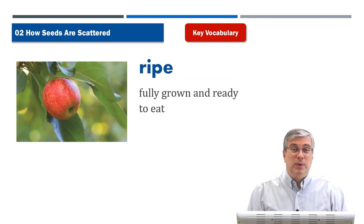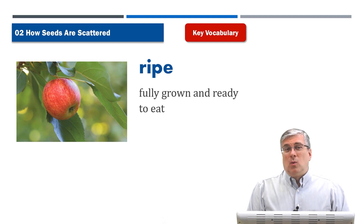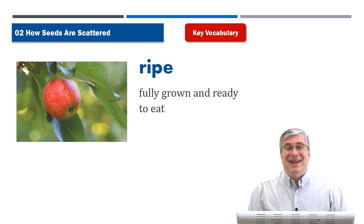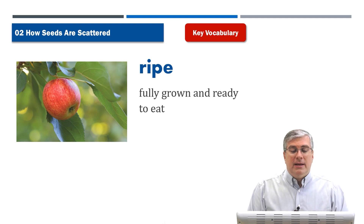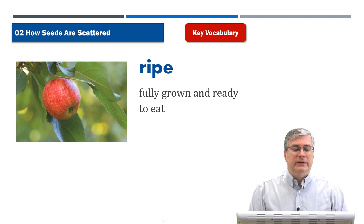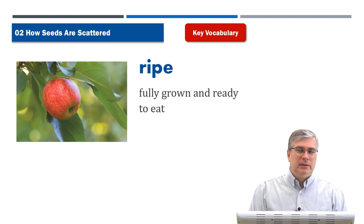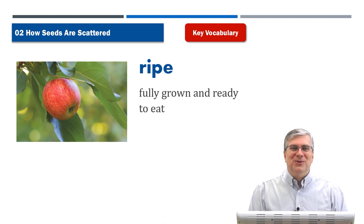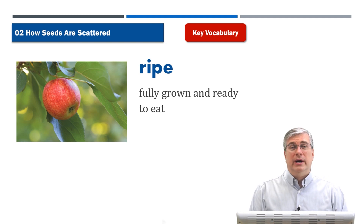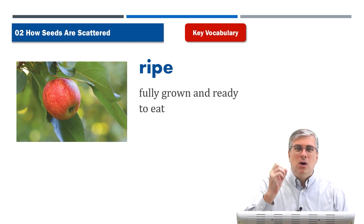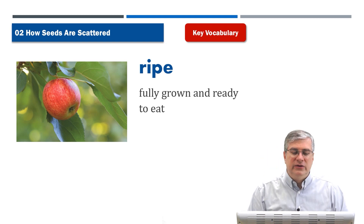Next we have ripe. Ripe is an important word especially if you're going to eat fruit or other types of plants or vegetables. Ripe means that it is fully grown and ready to eat. You don't want to eat an unripe apple — that doesn't taste very good. You want to eat a ripe apple, a ripe orange, or ripe corn. Whatever the plant is that you eat, it should be ripe, meaning it's fully grown and ready to eat.